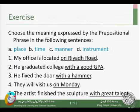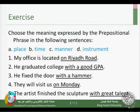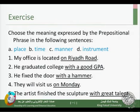Let's look at this exercise: choose the meaning expressed by the prepositional phrase — place, time, manner, or instrument. Number one: 'My office is located on Riyadh Road.' 'On Riyadh Road' expresses place — the location of my office. The answer for number one is A.